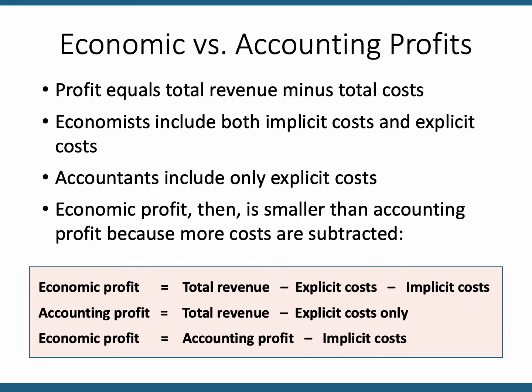Profits are different too. We have economic profit and we have accounting profit. Accounting profit is total revenue minus just explicit costs. Economic profit is going to be a smaller amount — it is total revenue minus explicit costs and also minus implicit costs. So economic profit will always be a smaller amount as long as there are implicit costs in the scenario.